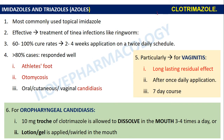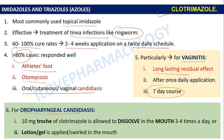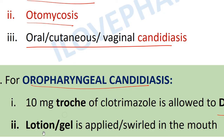Clotrimazole is an imidazole and the most commonly used topical imidazole, effective against tinea infections like ringworm. It has a 60–100% cure rate when applied twice daily for two to four weeks. More than 80% of cases respond well against athlete's foot, otomycosis, and oral, cutaneous, and vaginal candidiasis. It is particularly valuable in vaginitis due to its long-lasting residual effect, given as a once-daily, seven-day course. It is also effective in oropharyngeal candidiasis, where 10 mg troches of clotrimazole are dissolved in the mouth three to four times a day, or applied as lotions and gel swirled in the mouth.